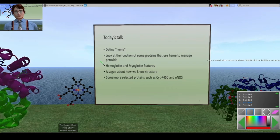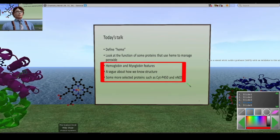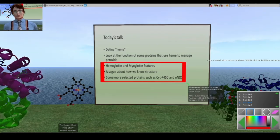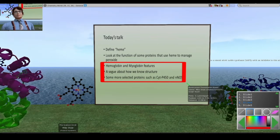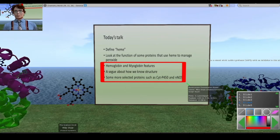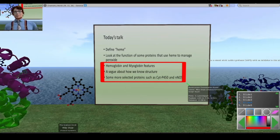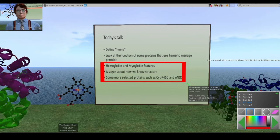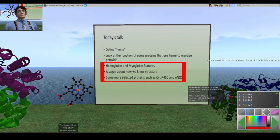I'll go over and talk more about some specific proteins, hemoglobin, myoglobin, a little segue about how we know structure, and then I'll talk a little bit more about some selected proteins such as cytochrome P450 and neuronal nitric oxide synthase.